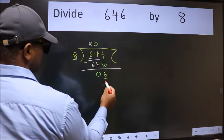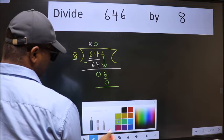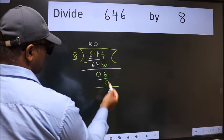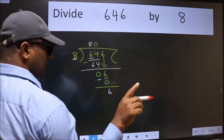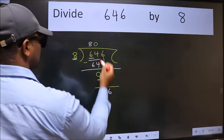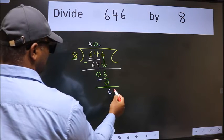8 into 0, 0. Now we subtract. We get 6. Over here, we did not bring any number down. And 6 is smaller than 8. So now we can put dot and take 0.